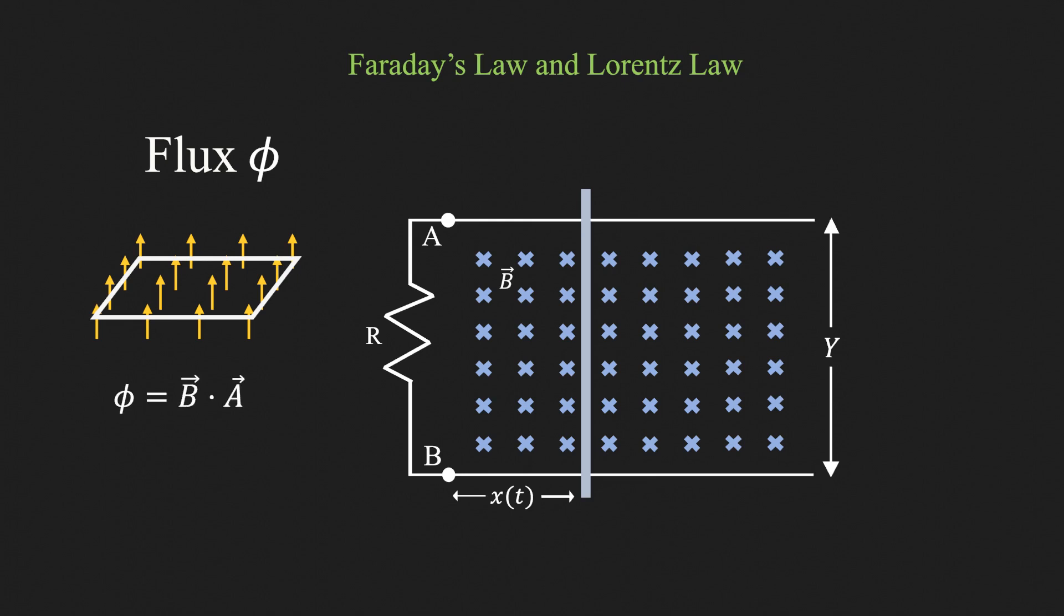In our case, we can write the cross-sectional area as y into x(t). So flux becomes B·y·x.